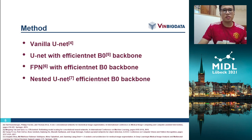In this work, we deploy four state-of-the-art models: U-Net, U-Net with EfficientNet-B0 as encoder, Feature Pyramid Network with EfficientNet-B0 as encoder, and Nested U-Net with EfficientNet-B0 as encoder. For further implementation details, please read the paper.